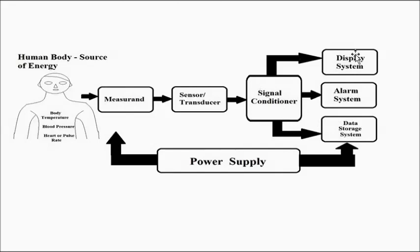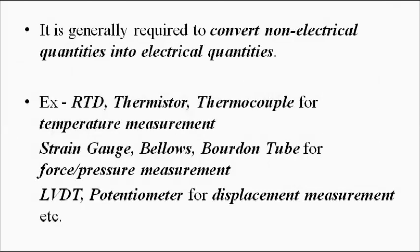The signal conditioner output is then given to the output stage, which can be used for display, storage, or setting up alarms. All these blocks are supplied by the power supply circuit. Basic examples of transducers include: for body temperature measurement — RTDs, thermistors, and thermocouples. For force and pressure measurement — strain gauge, bellows, and Bourdon tube. For displacement measurement — LVDT and potentiometer.